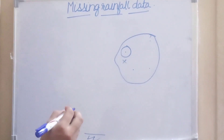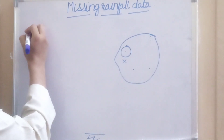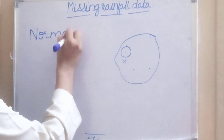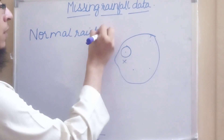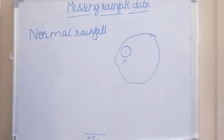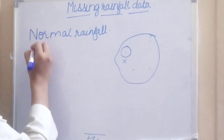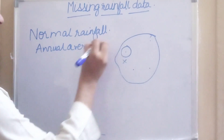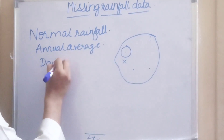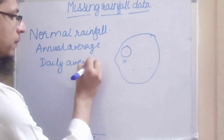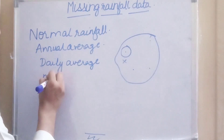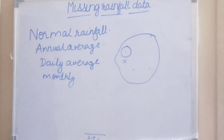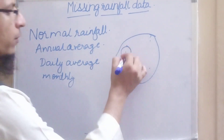For this we need to first know certain terms — that is the normal rainfall. What is normal rainfall? Normal rainfall is the average rainfall of the last 30 years. That may be annual average, daily average, or monthly average of the last 30 years. Depending upon that it will be called daily normal rainfall, monthly normal rainfall, or annual average rainfall for the particular gauging station.